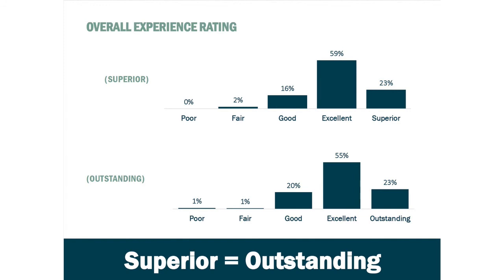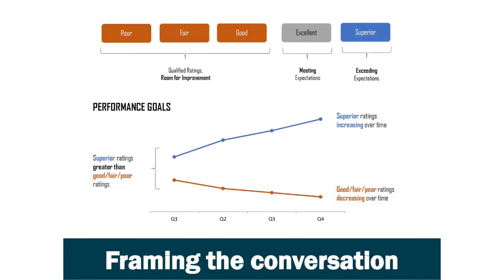Guests who responded 'superior' or 'outstanding' not only had no complaints, but they were supremely happy with their visit — they felt it was beyond excellent. The results of those interviews help us frame the conversation. We don't want guests to have any complaints, so we want to reduce poor, fair, and good responses. We're happy when people are satisfied, but what we really want is to exceed their expectations. For that reason, excellent becomes our neutral category, and ideally our superior ratings grow while good, fair, and poor ratings decline.